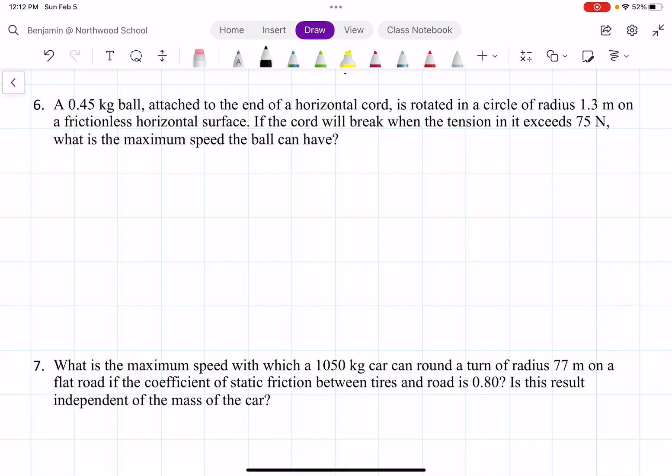For this question, we have a 0.45 kilogram ball attached to the end of a horizontal cord. It's rotated in a circle of radius 1.3 meters on a frictionless horizontal surface. If the cord will break when the tension in it exceeds 75 newtons, what is the maximum speed the ball can have?